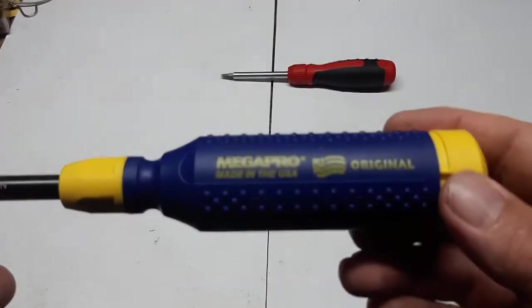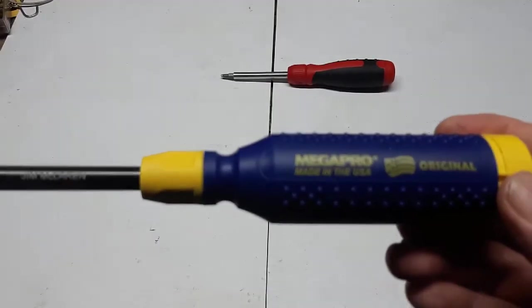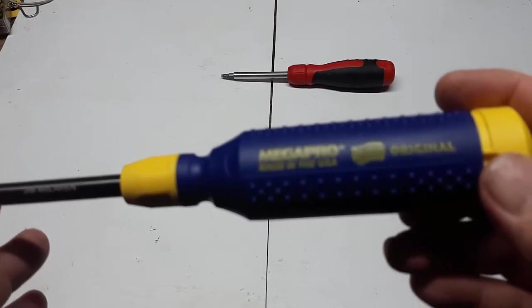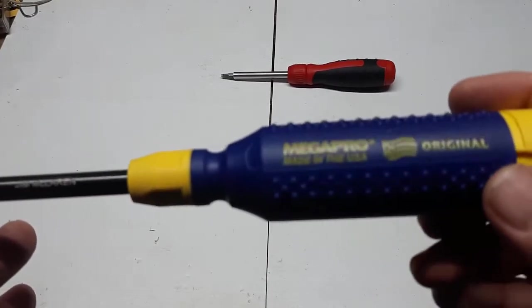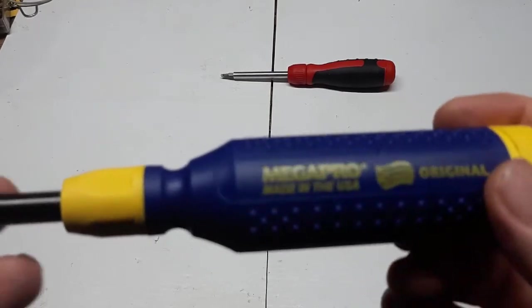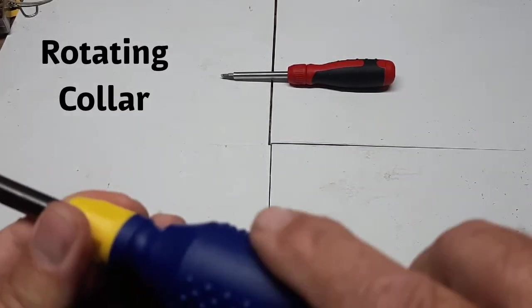Now let's talk about some features of the Original. It's not a ratcheting screwdriver—get that straight, it's not a ratcheting screwdriver. It's just a normal original screwdriver made in the USA, and it's got this rotating collar to start things off, which is a very nice feature.